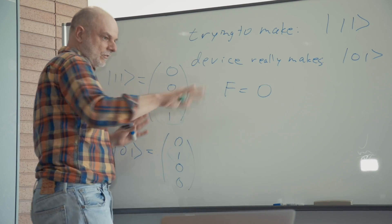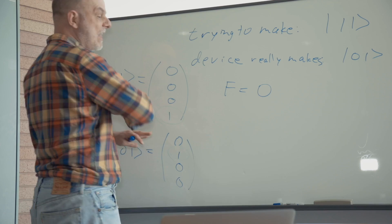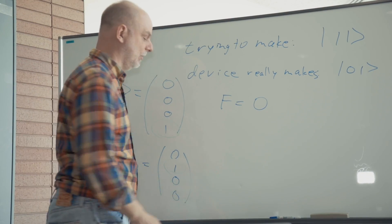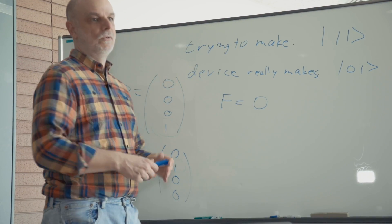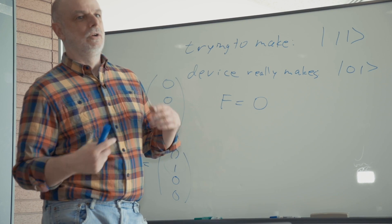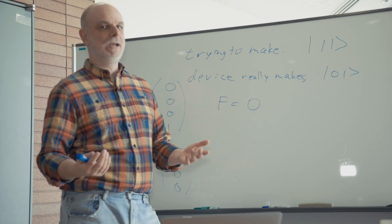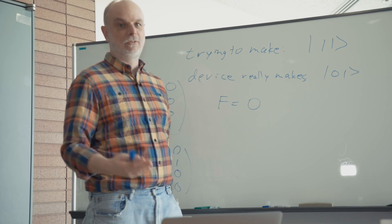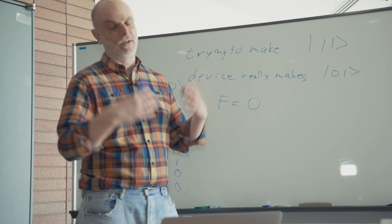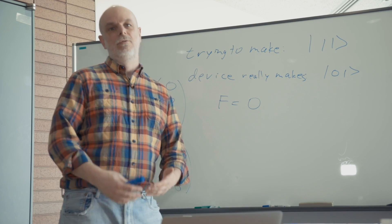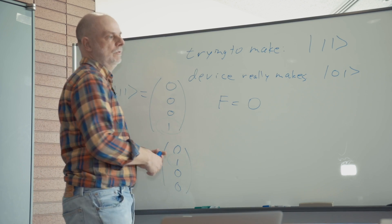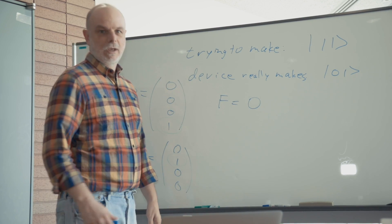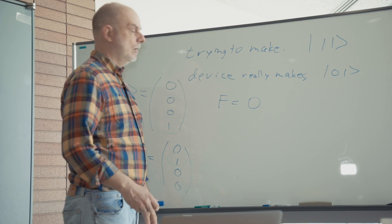As it happens, when the system is that far off, sometimes you can fix it if you have the ability to do certain things. In reality, the worst-case fidelity for one qubit is 50%, for two qubits the worst-case fidelity is 25%, and for three qubits the worst-case fidelity is 12.5% in the normal case. Hope that helps.